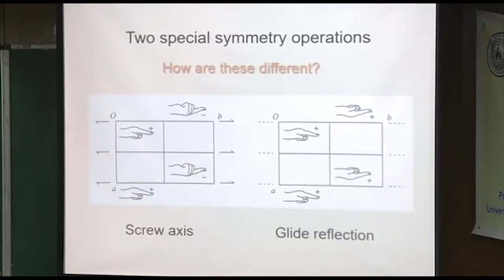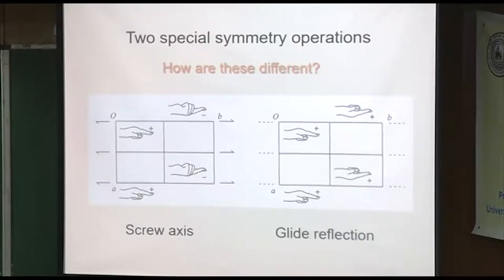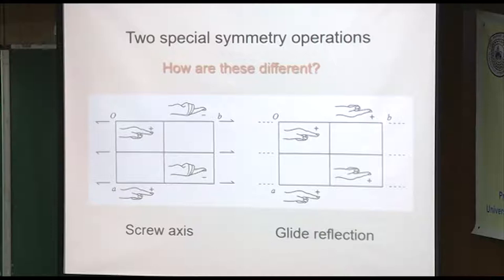I like this depiction of the two special symmetry operations. A screw axis involves two-fold rotation plus translation — the order doesn't actually matter, it's commutative. The same thing with the glide reflection: it's translation, but instead of rotation, it's mirror reflection. So examine these hands here.